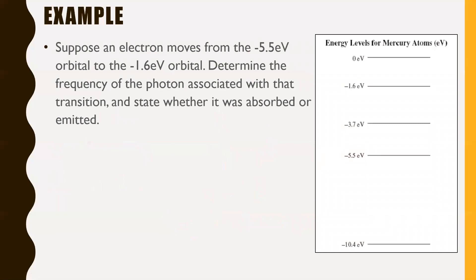Next one, this is a Bohr kind of question. Suppose an electron moves from the -5.5 eV orbital to the -1.6 eV orbital. We're dealing with a mercury atom—different atoms have different energy levels. Determine the frequency of the photon associated with that transition and state whether it was absorbed or emitted. Give you a little bit of time on this one.